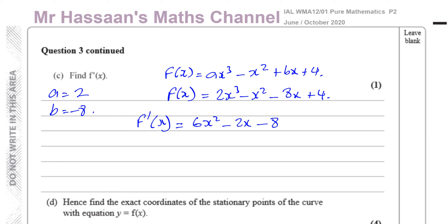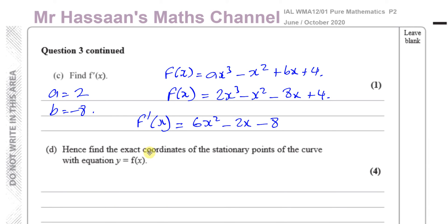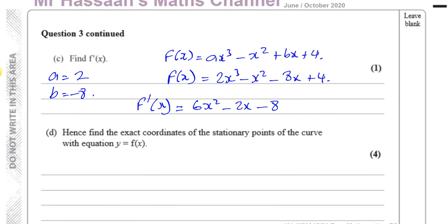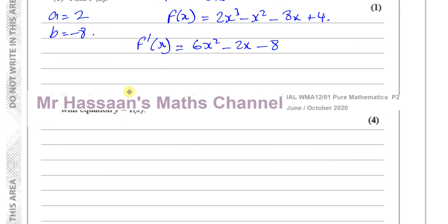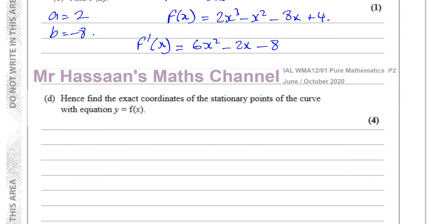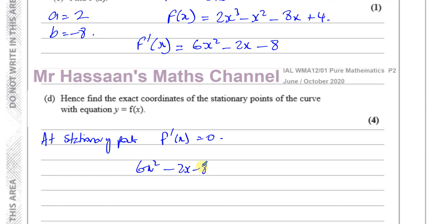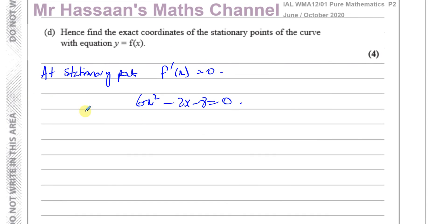Part d asks us to find the exact coordinates of the stationary points of the curve y equals f(x). At stationary points, f'(x) equals zero. So 6x squared minus 2x minus 8 equals zero. Dividing by 2 gives 3x squared minus x minus 4 equals zero.